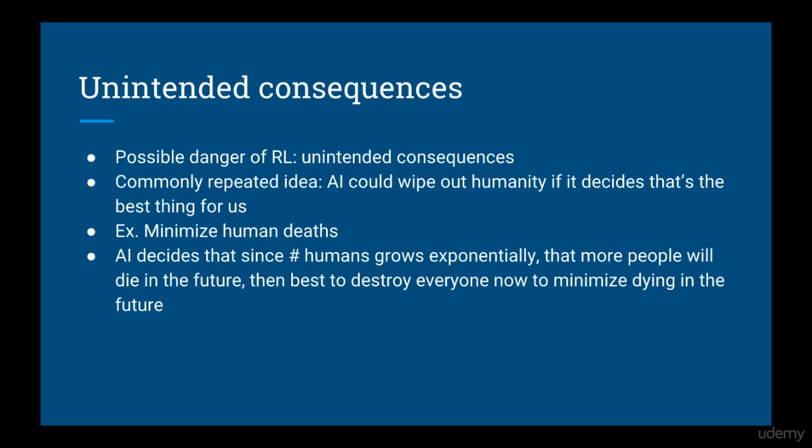One potentially dangerous aspect of this is the idea of unintended consequences. We've all heard about the idea that an AI could potentially wipe out humanity if it decides that is the best thing for us. Imagine you program your AI to minimize the number of human deaths, and then it decides that since humanity is going to grow exponentially and more people are going to die, it would be better to destroy everyone now to minimize more dying in the future. So there is some danger of unintended and dangerous side effects for AIs interacting with the real world.